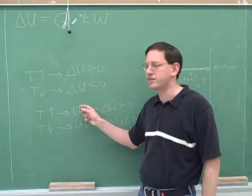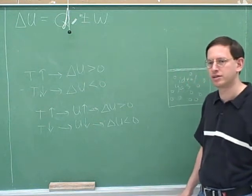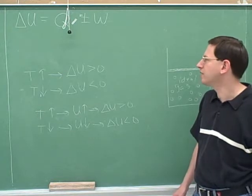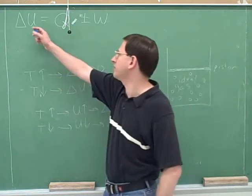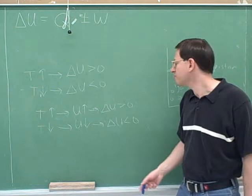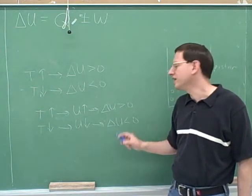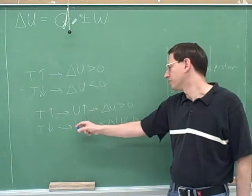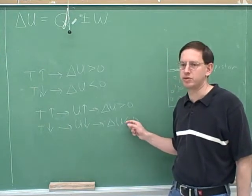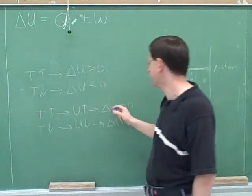Increasing the temperature increases the level of energy, and decreasing the temperature decreases the level of energy — so energy and temperature move in the same direction. The fundamental law of thermodynamics has delta U in it, not U. So if the energy is going up, delta U is positive; when the energy is going down, delta U is negative. These are the forms we're going to plug into this equation, so we focus on how temperature affects delta U.